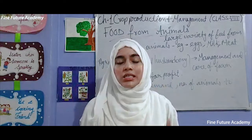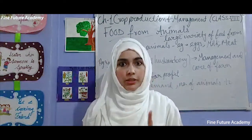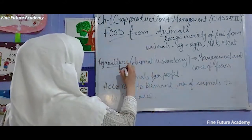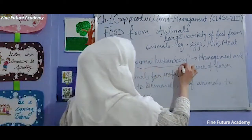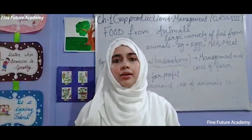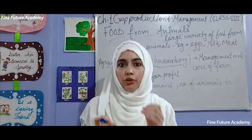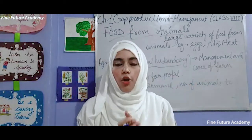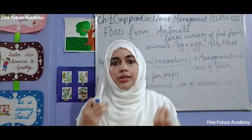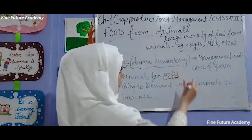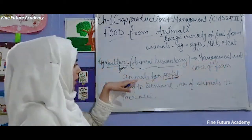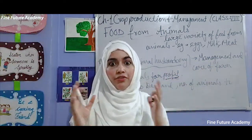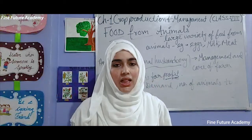If demand has increased, then obviously in the scientific way they have to rear animals. I have explained in the first video about agriculture and agriculture farms. So the first point I have called animal husbandry. What do we do in animal husbandry? In animal husbandry, animals grow in the farm, they take care so that they are healthy, and the useful things — milk and eggs — are healthy for us. When they buy and sell them, they get profit. This is what we know as profit management and care of farm animals.